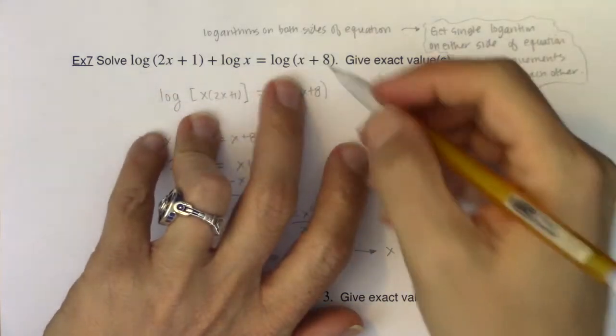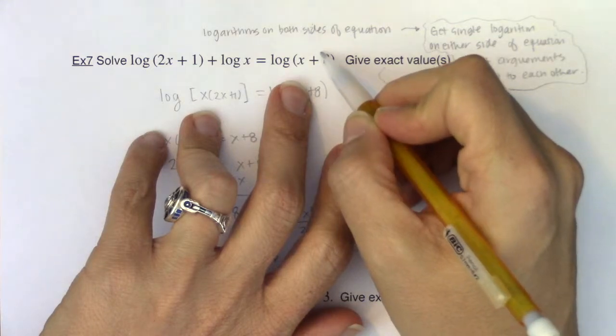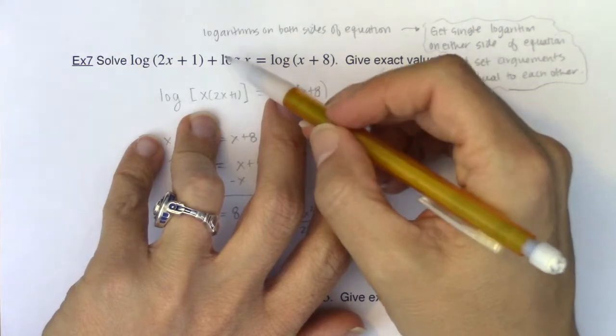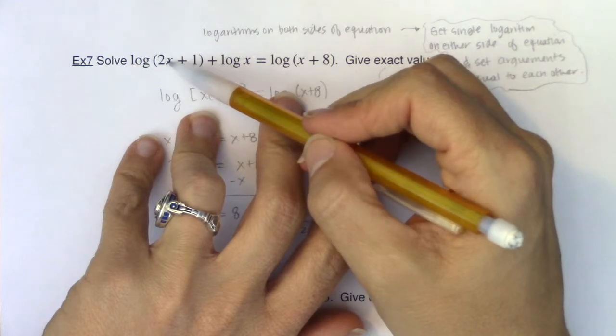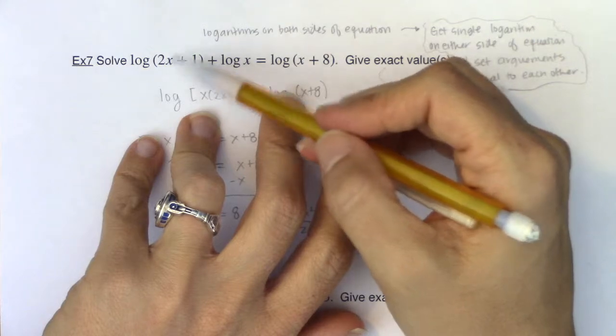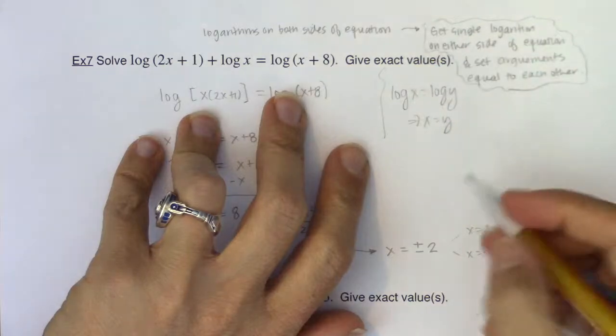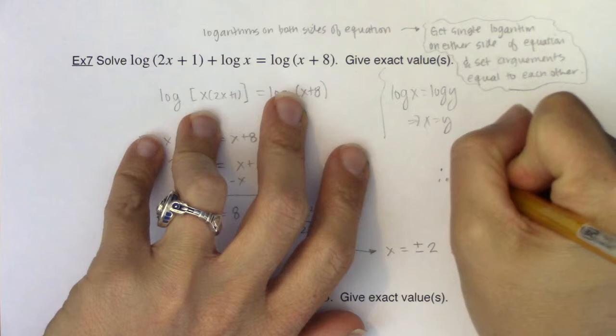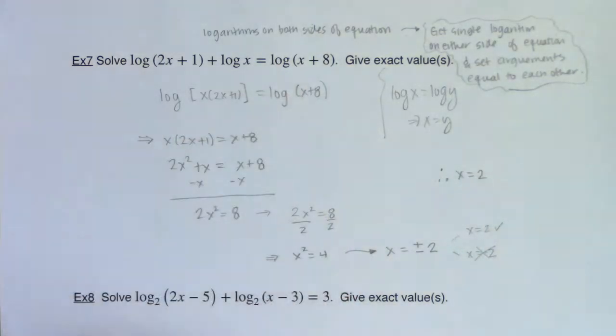Let's try negative 2. If I plug negative 2 into this argument, negative 2 plus 8 is positive 6, so that's fine. But if I plug negative 2 in here, that is a problem. I'm not allowed to take the logarithm of negative 2. And over here, we had 2 times negative 2, which is negative 4. Negative 4 plus 1 is negative 3. So I have an argument issue on this logarithm. So basically, the left side of my equation, it's bad news bears. I can't use this solution. So really, the only solution to this logarithmic equation is x being equal to 2.